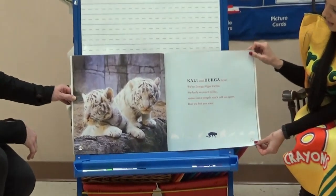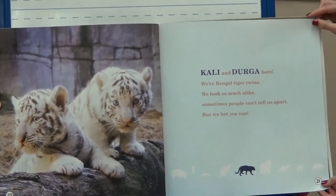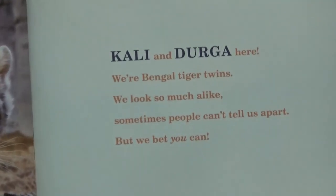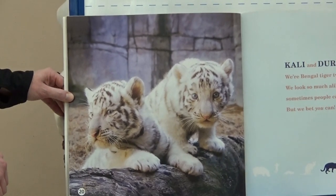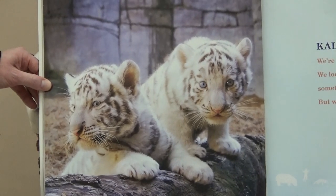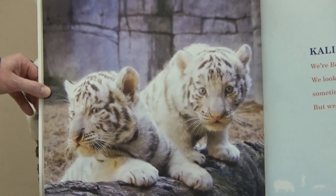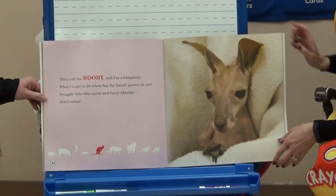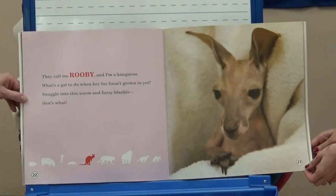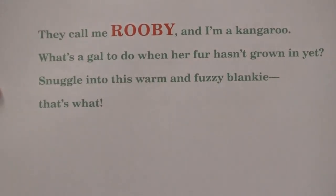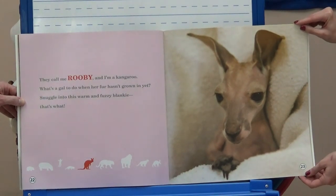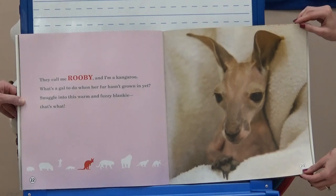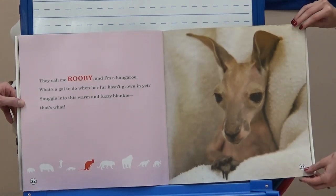'Callie and Durga here. We're Bengal tiger twins. We look so much alike.' Remember, what does alike mean? The same. And as you can see, our Bengal twin tigers look just alike. 'They call me Ruby, and I'm a kangaroo. What's a gal to do when her fur hasn't grown in yet? Snuggle into this warm and fuzzy blankie.' So why do you think our kangaroo is snuggled in that blanket? Because the kangaroo doesn't have any fur — she might be cold, and that warm blankie will keep her warm.